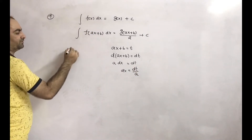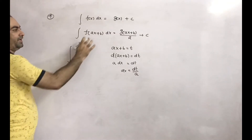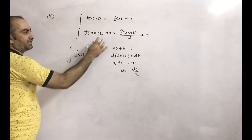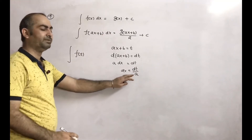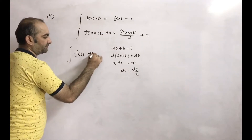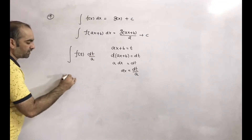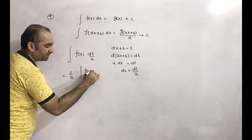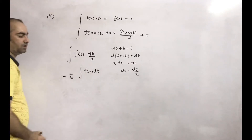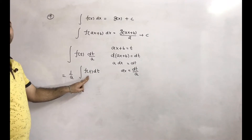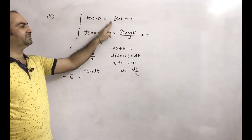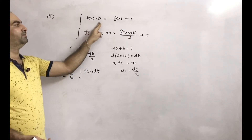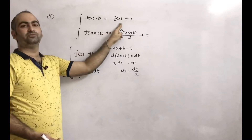This will convert into an integration in terms of t. ax+b we write as t. So what will come: f(t) and dx, so dx is dt/a. This gives us 1/a times integration of f(t)dt. Now this integration we know: since ∫f(x)dx = g(x)+c, if I write t instead of x, then ∫f(t)dt = g(t)+c.